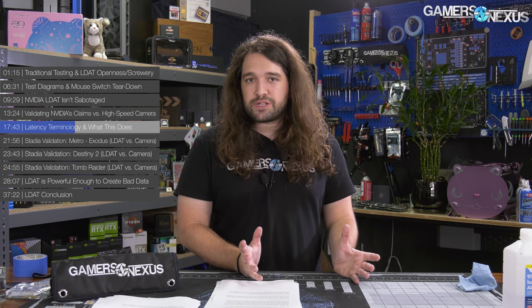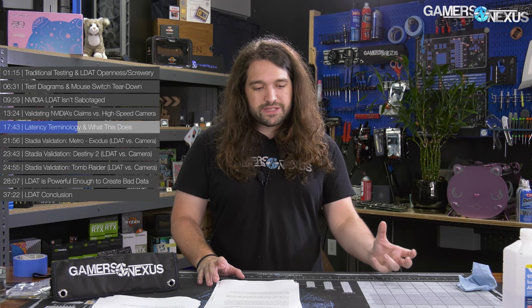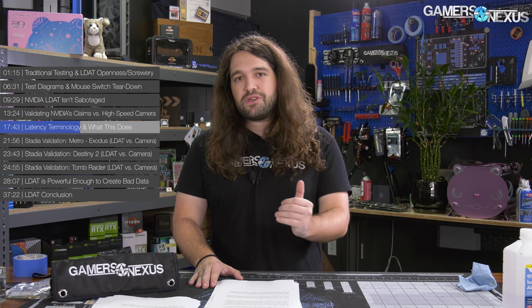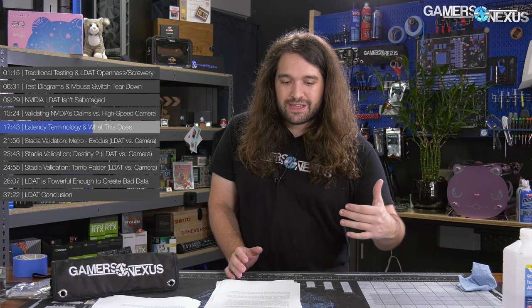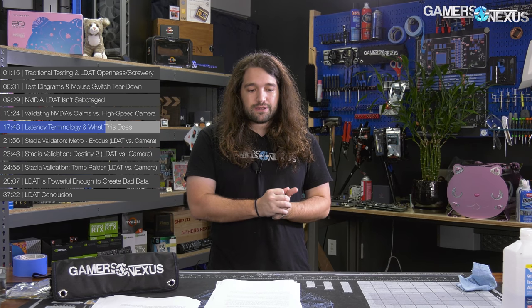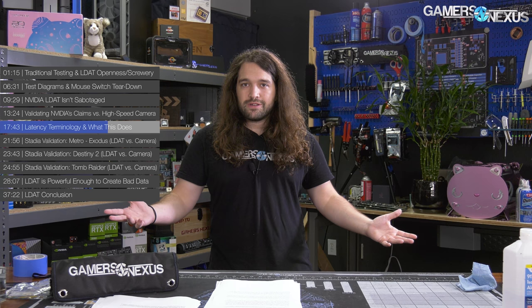A lower frame rate also implies a higher end-to-end system latency — fewer frames being displayed means fewer opportunities to show a response. This opens a Pandora's box: if the goal is to test GPU A versus GPU N, and GPU N is running at a higher frame rate in most games, you should see a lower latency. So do you figure out a way to lock the GPUs to roughly the same frame rate, potentially hindering one to match its competitor and measure purely the end-to-end system latency? Or do you let them go and measure with the higher frame rate?